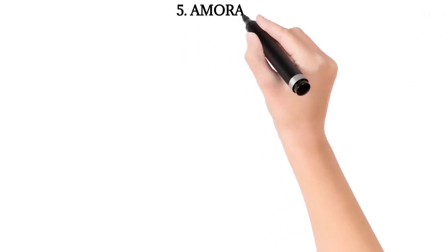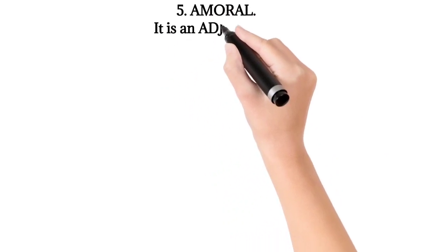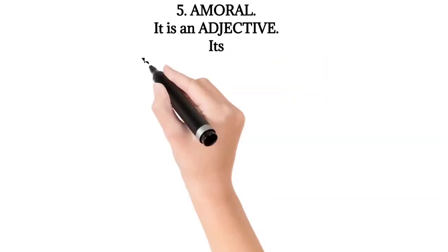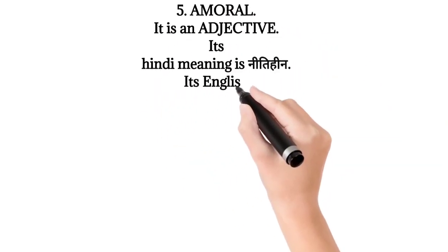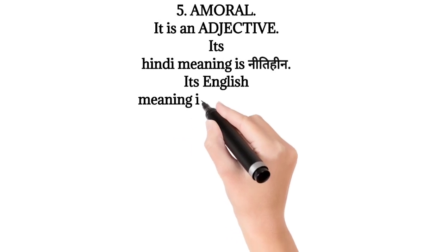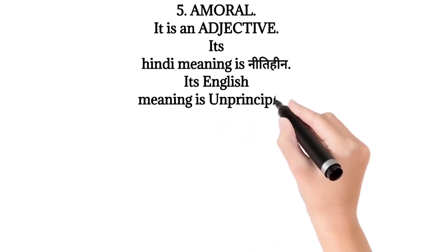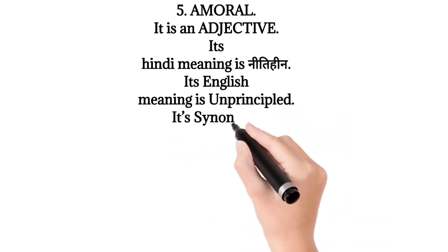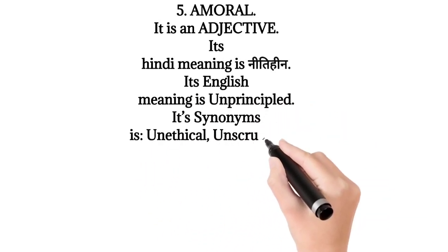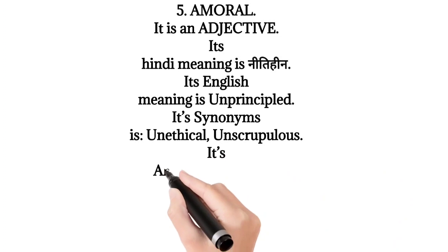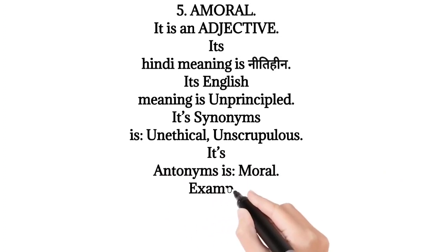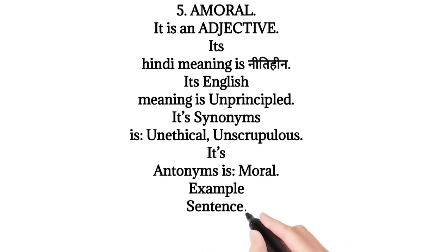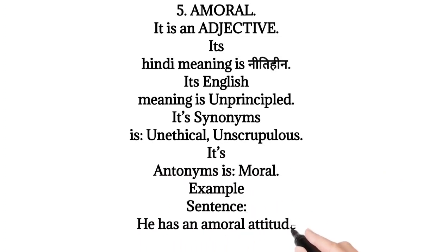5. Immoral — it is an adjective. Its Hindi meaning is 'nitihin'. Its English meaning is 'unprincipled'. Its synonyms are unethical, unscrupulous. Its antonym is moral. Example sentence: He has an immoral attitude towards everything in life.